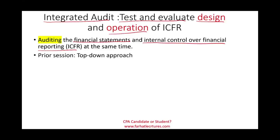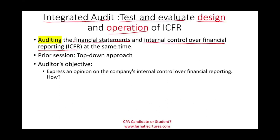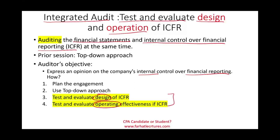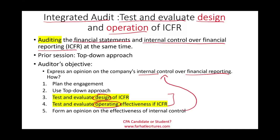In the prior session, we looked at what we call the top-down approach. Our objective as auditors in an integrated audit is to issue an opinion about the internal control over financial reporting. The steps we undertake are: plan the engagement, use the top-down approach, test and evaluate the design of internal control over financial reporting, test and evaluate the operating effectiveness, and then form an opinion about the effectiveness of internal control.